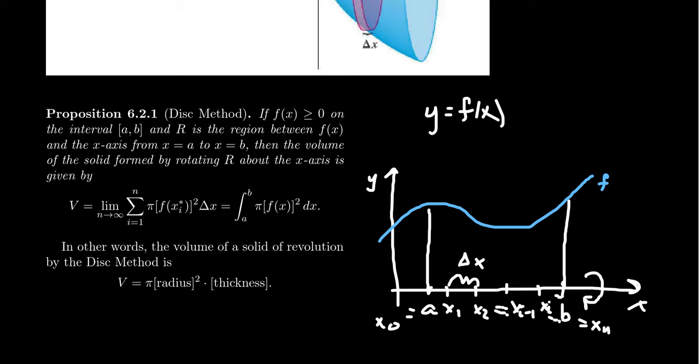Delta x has the same meaning as it did previously. Think of this in the same way when we're trying to approximate the area under the curve using rectangles. If we put a rectangle in there, the thickness of this rectangle is delta x. The height of this rectangle is some value f of xi star. Xi star is just a representative who lives inside of this interval.